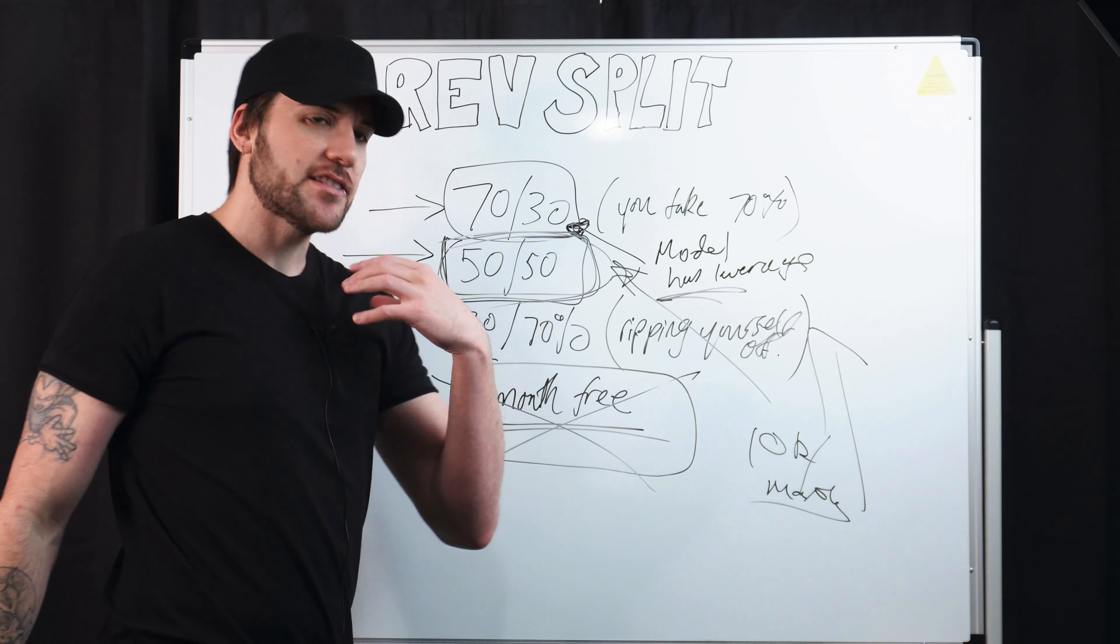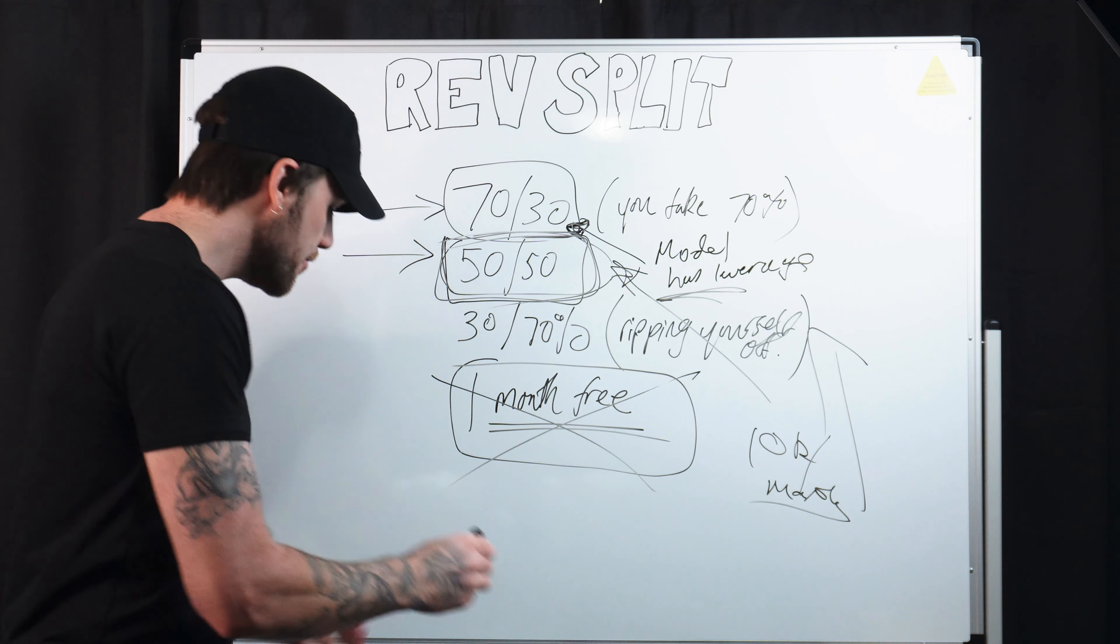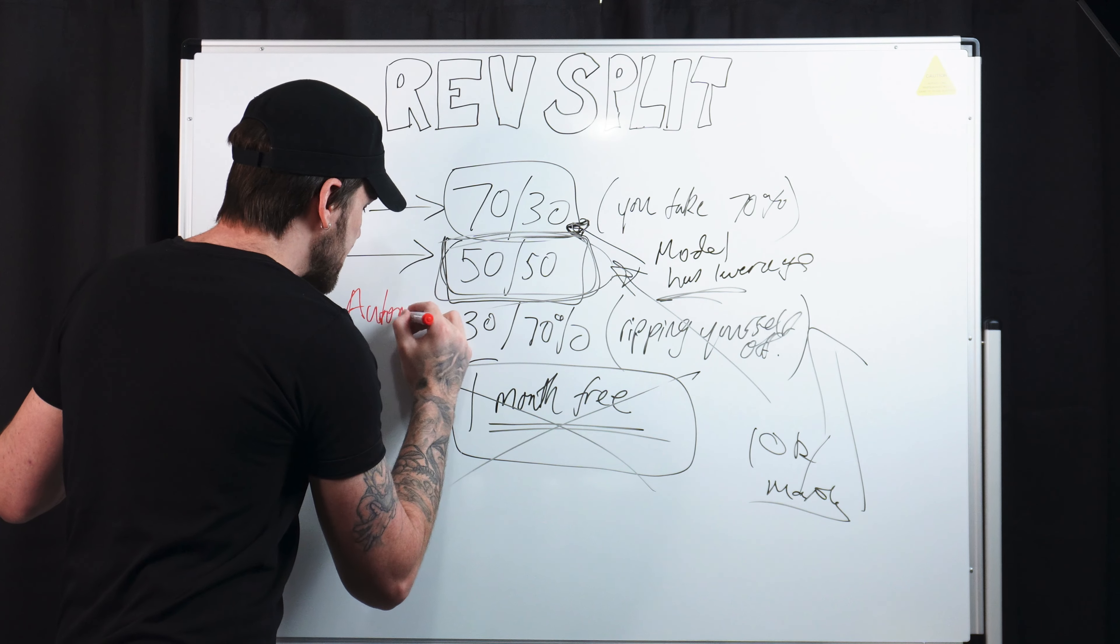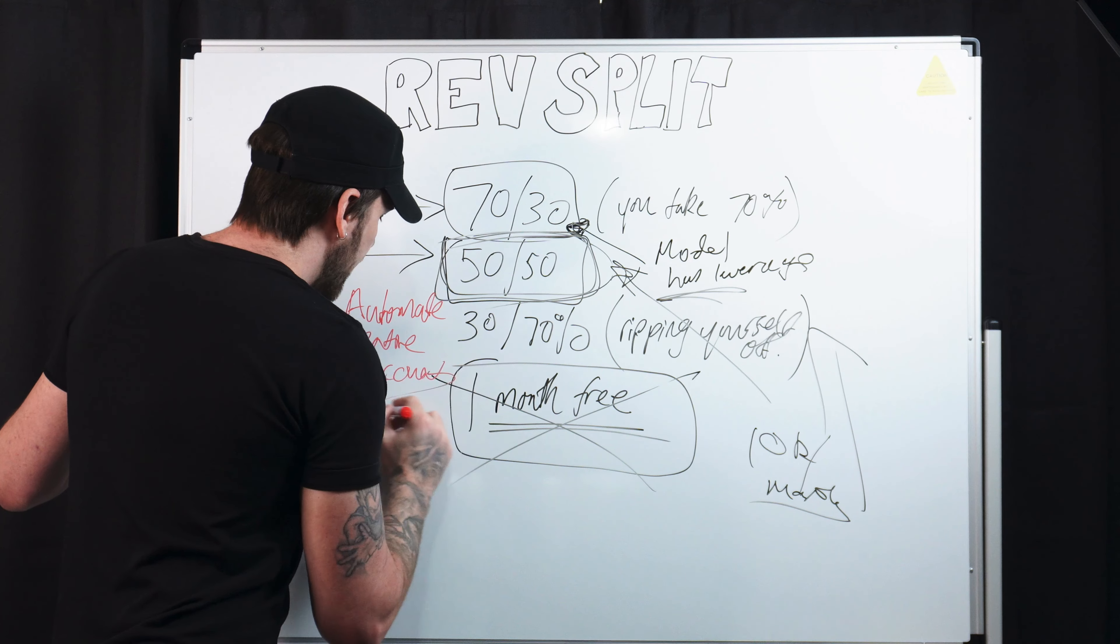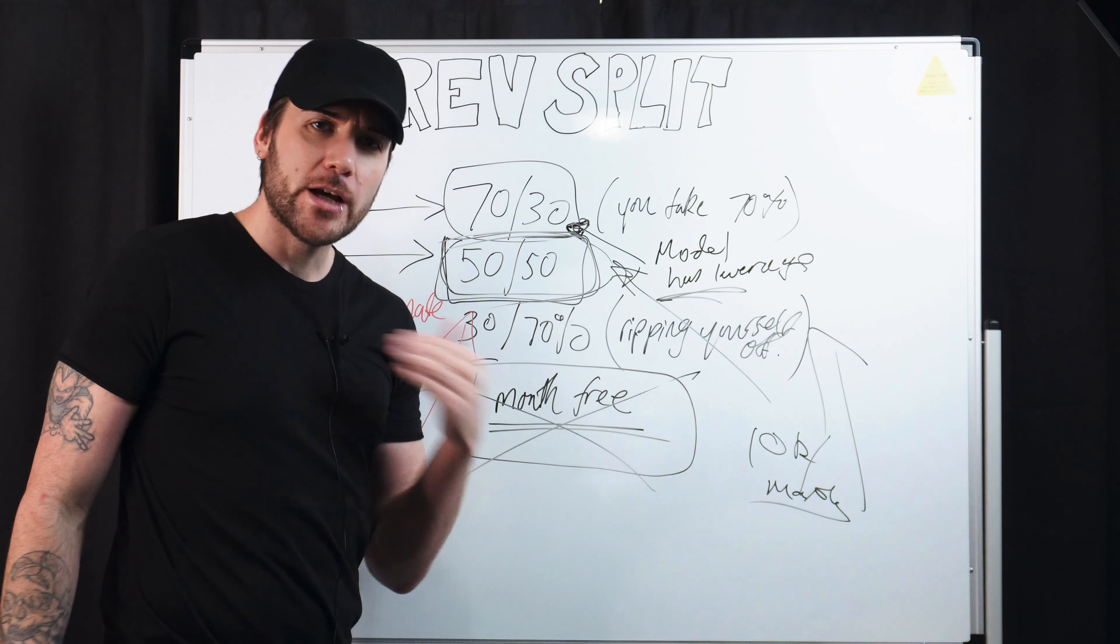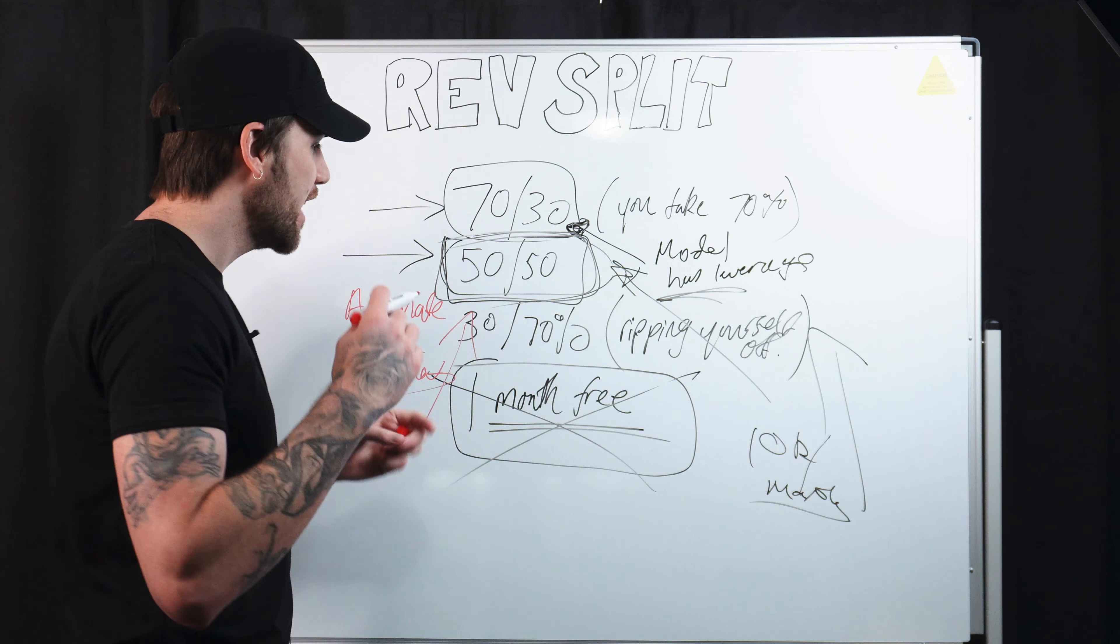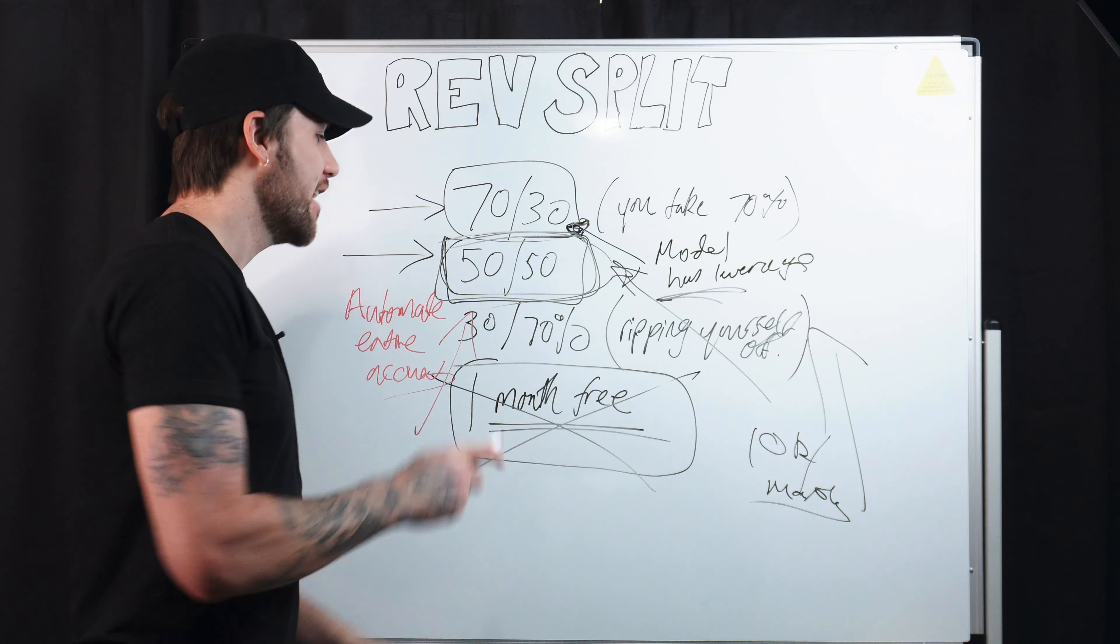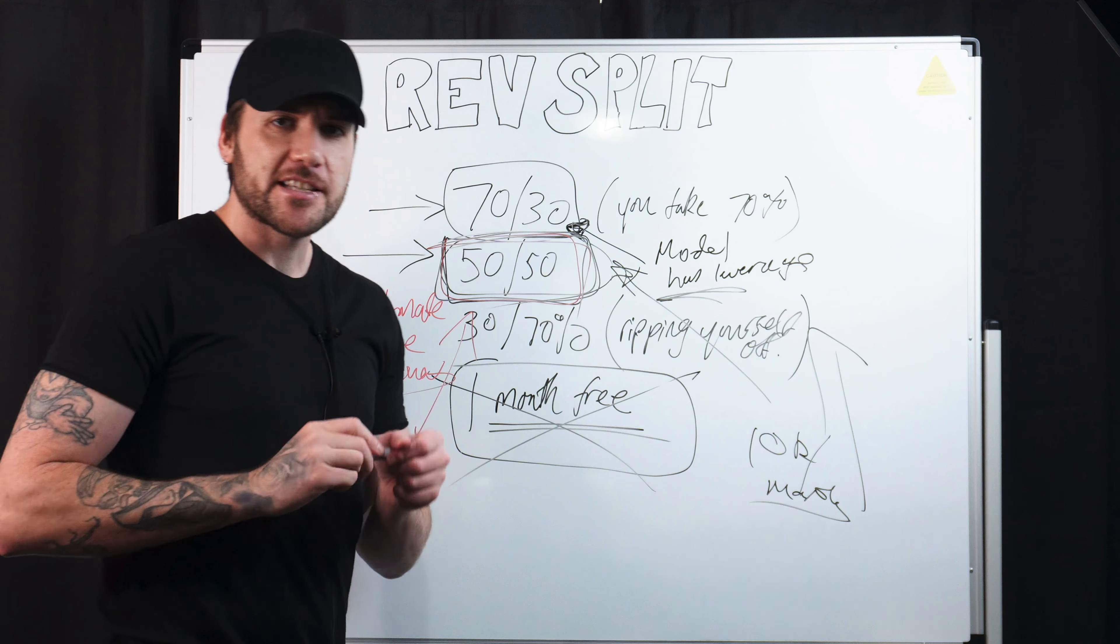Now here's the proposal that you say to the model and this will allow you to get around any objections that she has. You say we automate, remember what we said earlier, automate entire account and in return, we split it down the middle 50, 50. You don't get paid. We don't get paid. That way, if we don't do any work, we don't get paid because if we were to structure this any other way, we could just sit on our hands, do nothing and we'll still get paid. But if we split down the middle and go 50, 50, we're partners, which means if you don't make money, we don't make money.